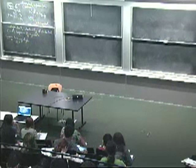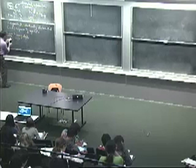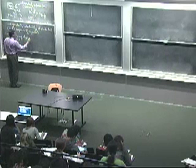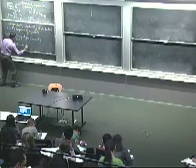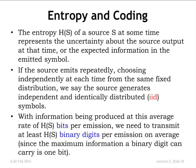That tells you, if you're going to code this, the expected code length L should be greater than or equal to H. You need to transmit at least this many binary digits on average to convey the information coming out of the source per symbol, or per time step. That was the basic setup.